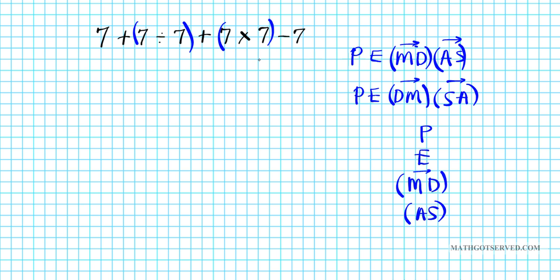This is division and this is multiplication. So these two are the ones we do first. Does it matter? The one we do first, it doesn't really matter. They're of the same hierarchy. So let's go ahead and do that. We will have seven plus, seven divided by seven is one plus seven times seven is 49 minus seven.